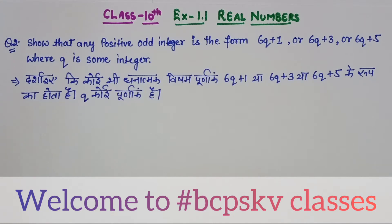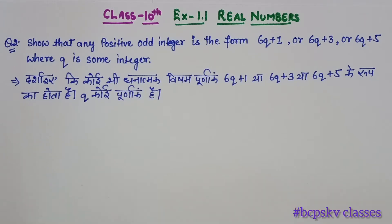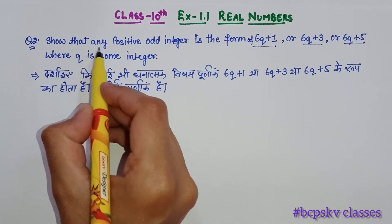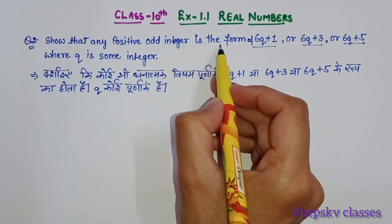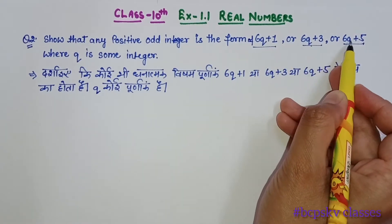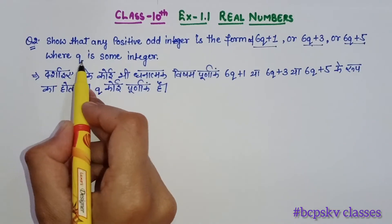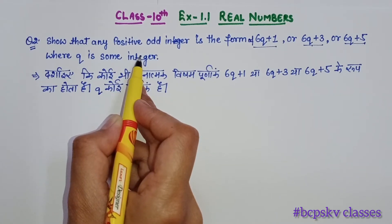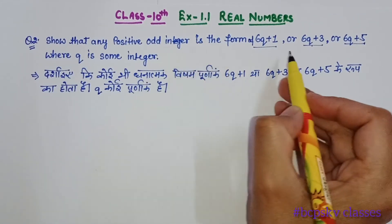Hello everyone, myself Dipika Aruda from hashtag BCPSKV Classes. Today we will do class 10th Exercise 1.1, Question Number 2. In question number 2, we are given: show that any positive odd integer is of the form 6q plus 1, 6q plus 3, or 6q plus 5, where q is some integer. We have to show that a positive odd integer is in this form.